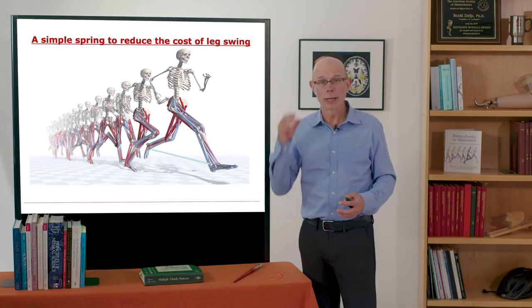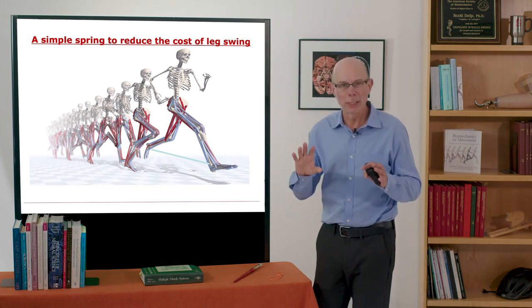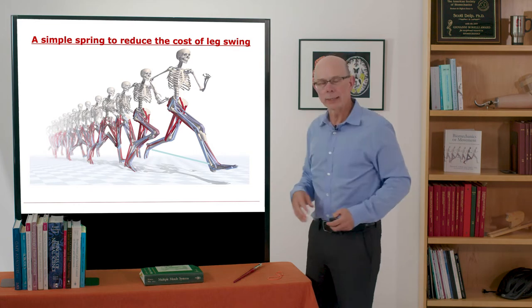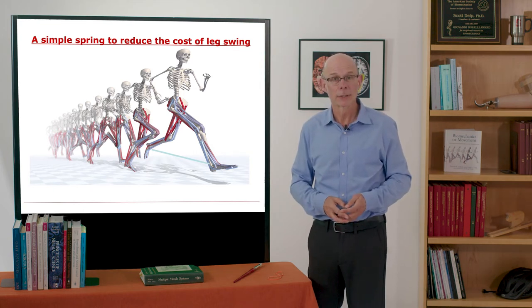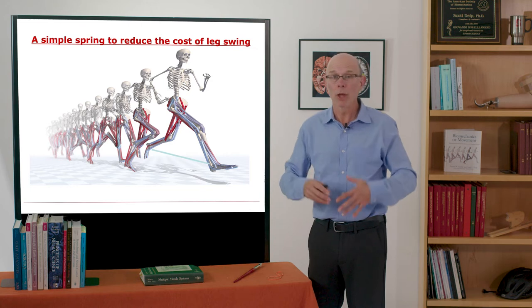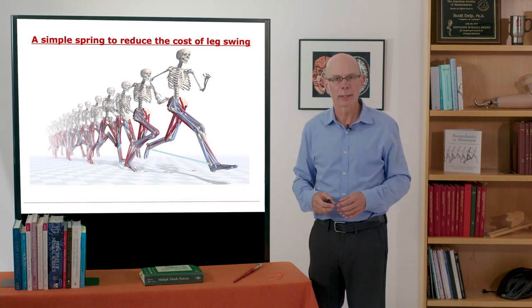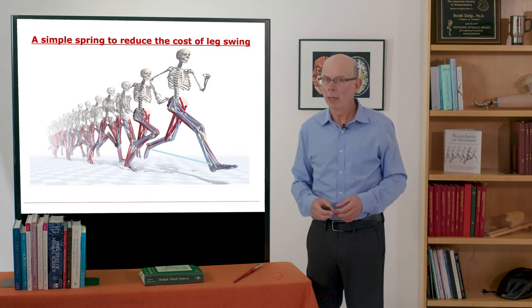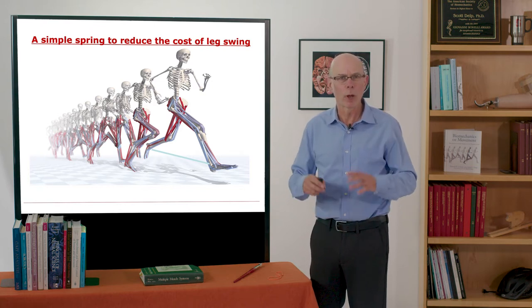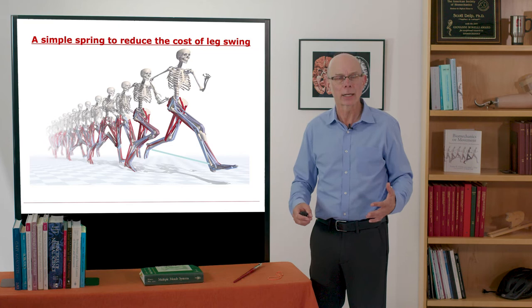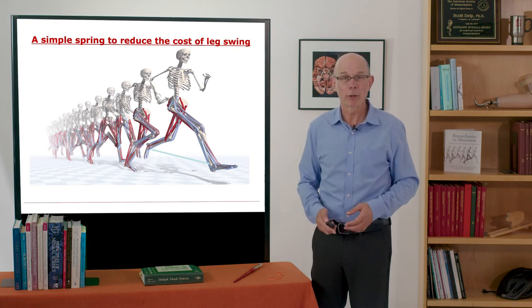Some students were interested in modeling and simulation of movement. They put a spring between and they saw indeed it did save energetic cost. Cole Simpson and other colleagues in the lab actually built what he called an exotendon out of surgical tubing, very inexpensive device, and went running with it and it felt fantastic. The swinging of his legs felt much easier.